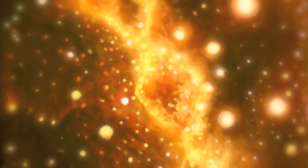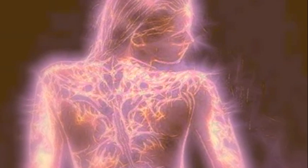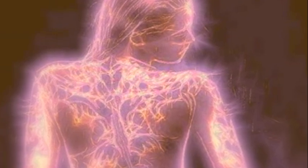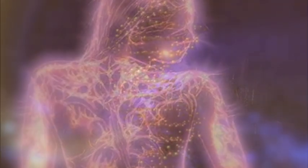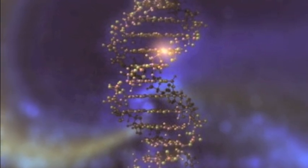Within human cells are light-encoded filaments, fine gossamer threads of energy that carry information. When these gossamer threads are working together like a cable, the way fiber optics work, they form the helix of your DNA.